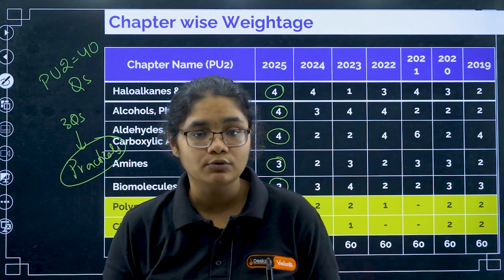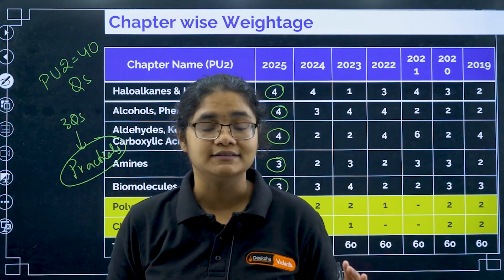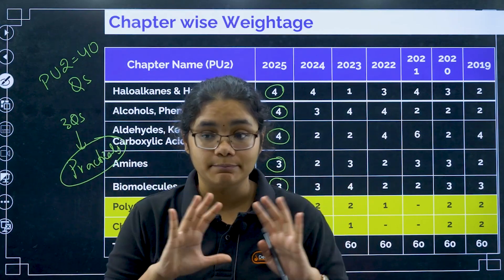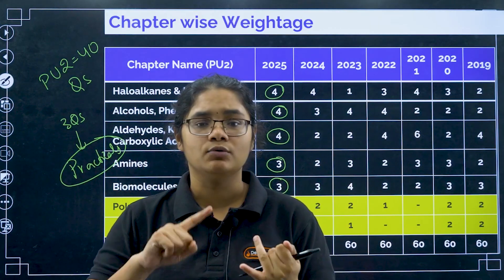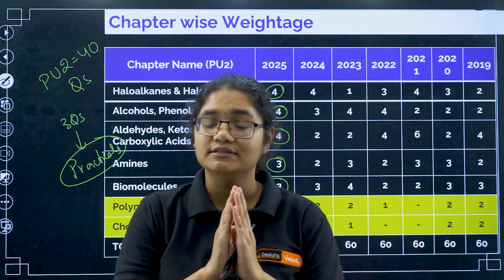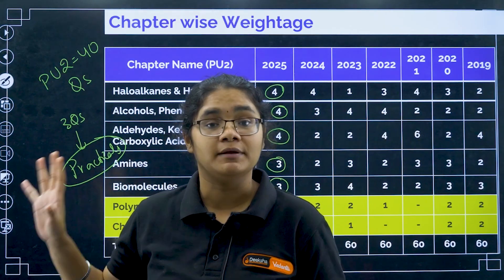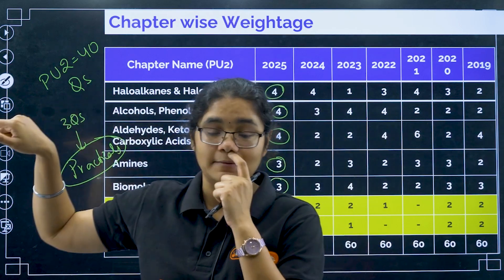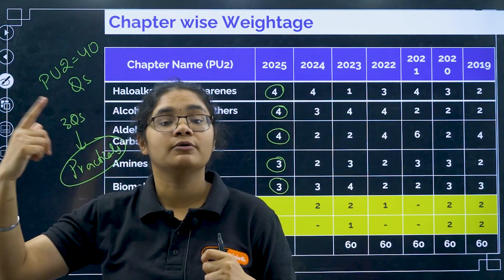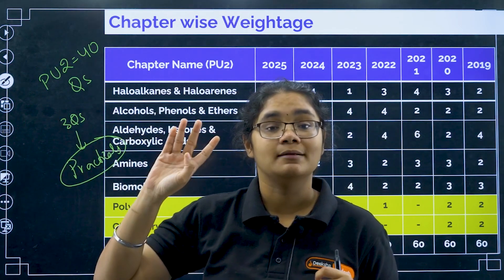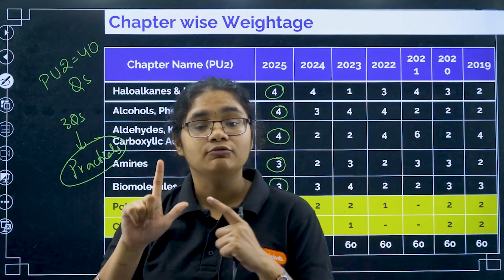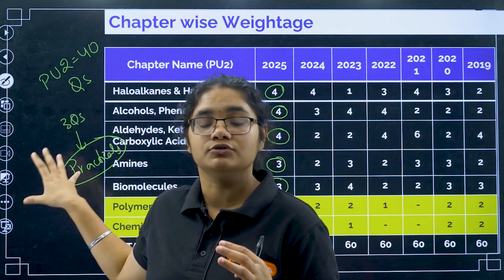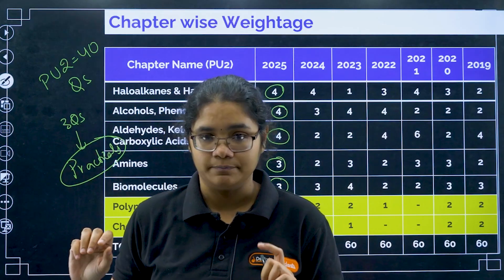So if you are in PU2 right now, make sure you are revising and completing PU2 chapters fully and perfectly. You should be making notes, solving PYQs, and doing everything properly for PU2 chapters. Once you are done with PU2, then focus on the five important PU1 chapters: chemical bonding, thermodynamics, equilibrium, and the two organic chapters. After that, also focus on the practical questions.